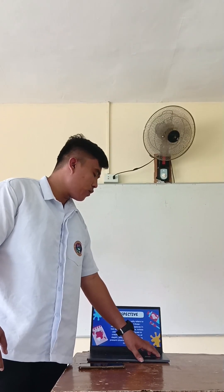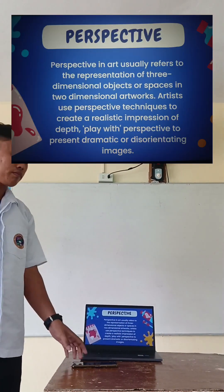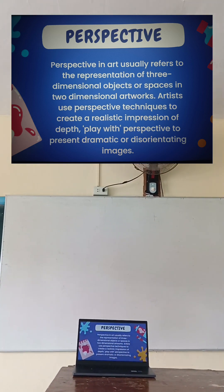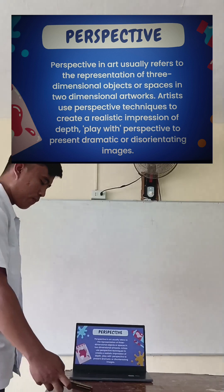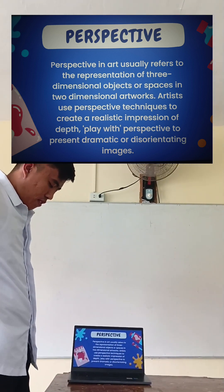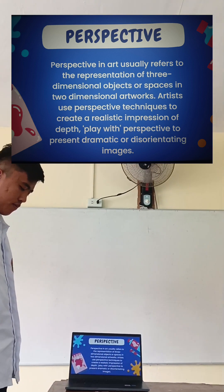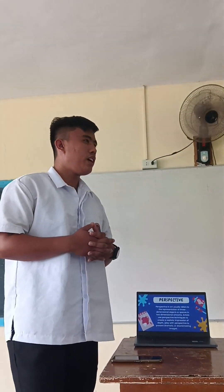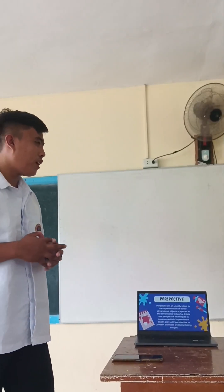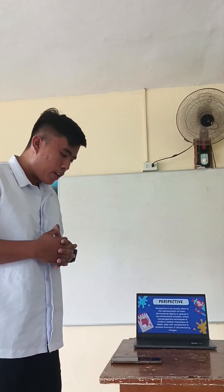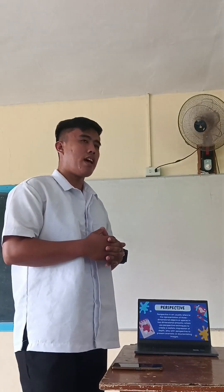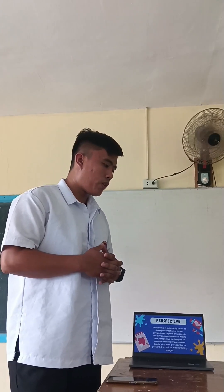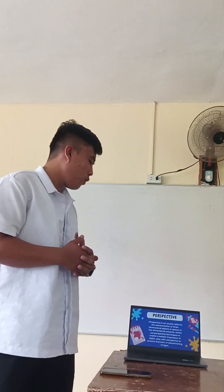First is perspective. Perspective in art usually refers to the representation of three-dimensional objects or spaces in two-dimensional artworks. Artists use perspective techniques to create a realistic impression of depth, and play with perspective to present dramatic or disorientating images. It allows artists to create illusions of space, distance, and volume.